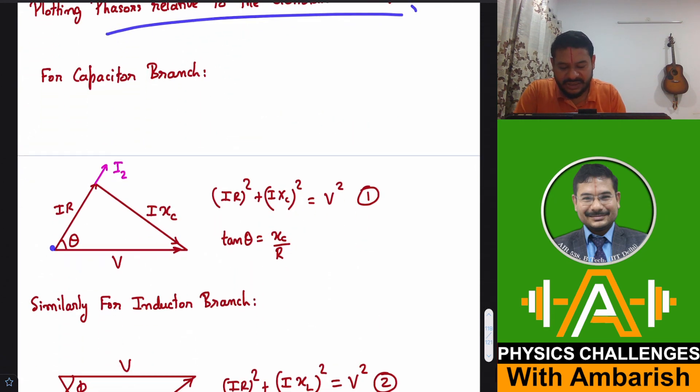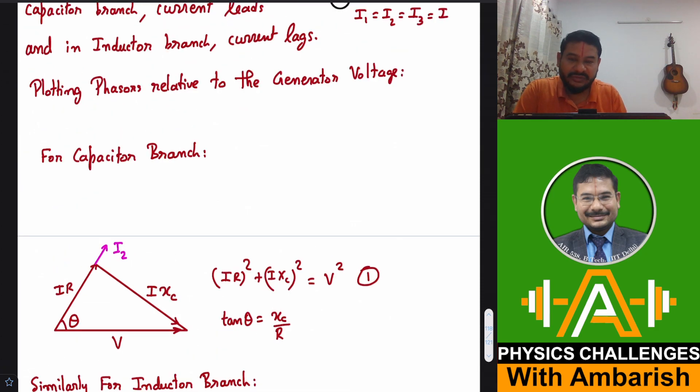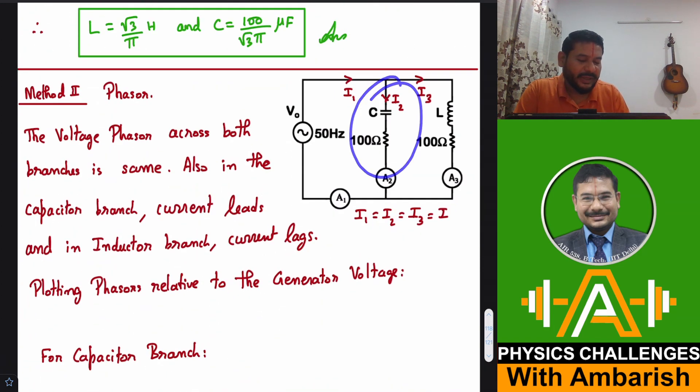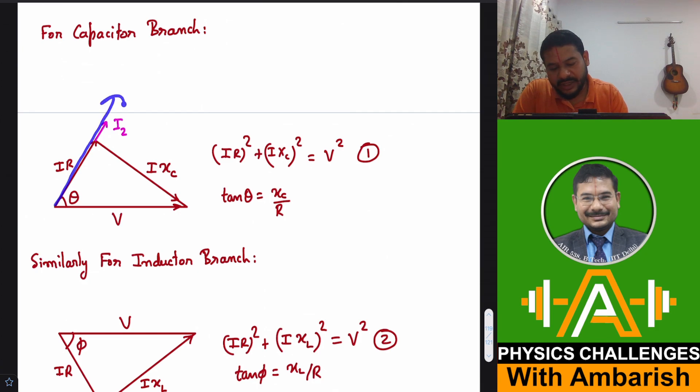So for capacitor branch, let's say generator voltage is horizontal phasor and let's say current leads by an angle of theta. So what is the voltage in the resistor? You know that in the resistor, the voltage and the current are in the same phase. So this is the voltage phasor IR and the voltage in the capacitor part will be lagging behind the voltage in the resistor part. Why? Because voltage lags behind by a phase of pi by 2. So this angle is 90 degrees. So this is I2. Let me show you the figure. So with respect to this I2, the voltage in the capacitor is lagging behind by phase of pi by 2. That's why I have drawn relative to I2, I have taken 90 degree angle and drawn I XC. And of course, the vector sum of these two voltages should be equal to the vector voltage V.